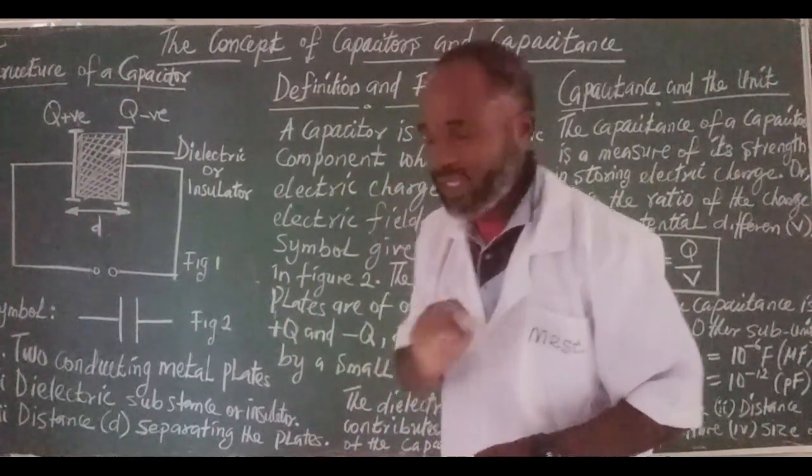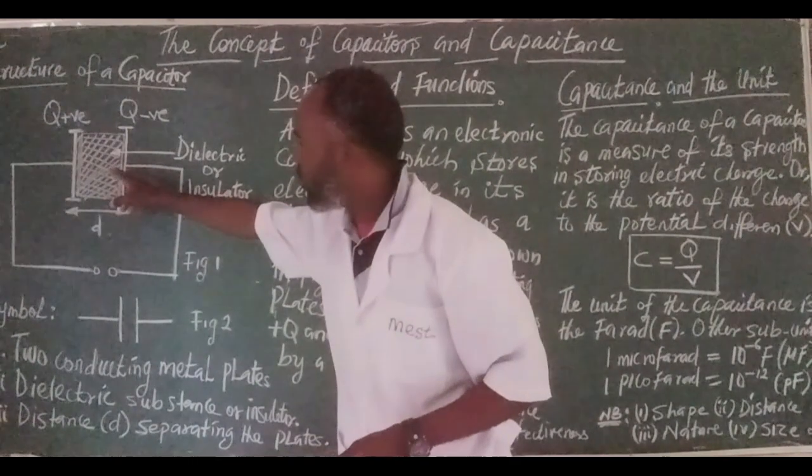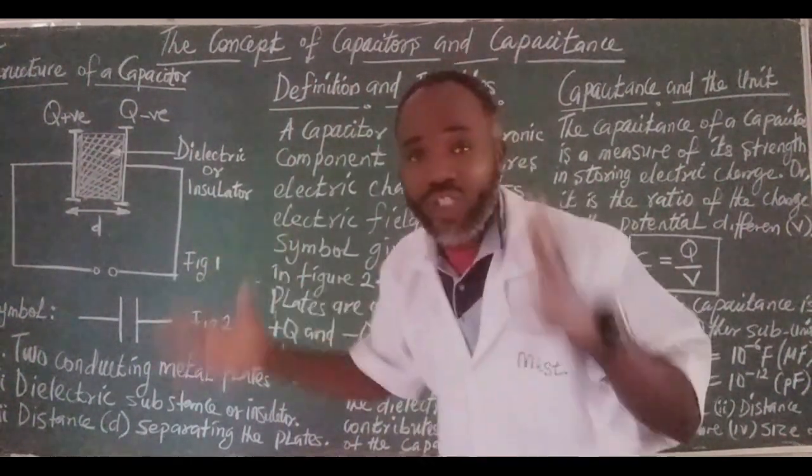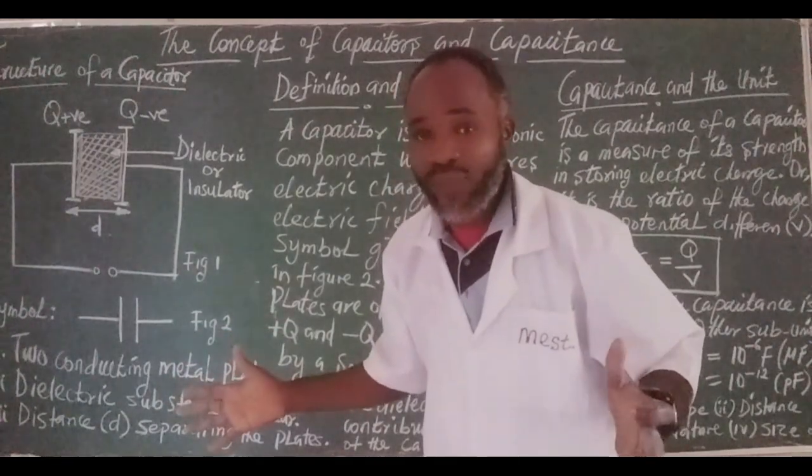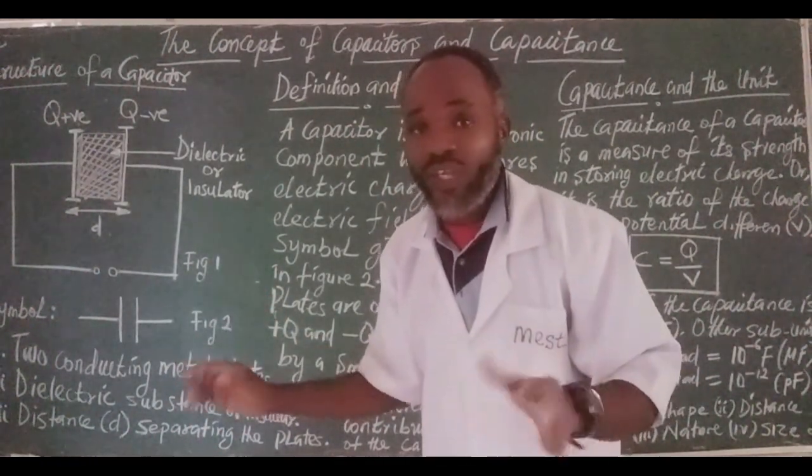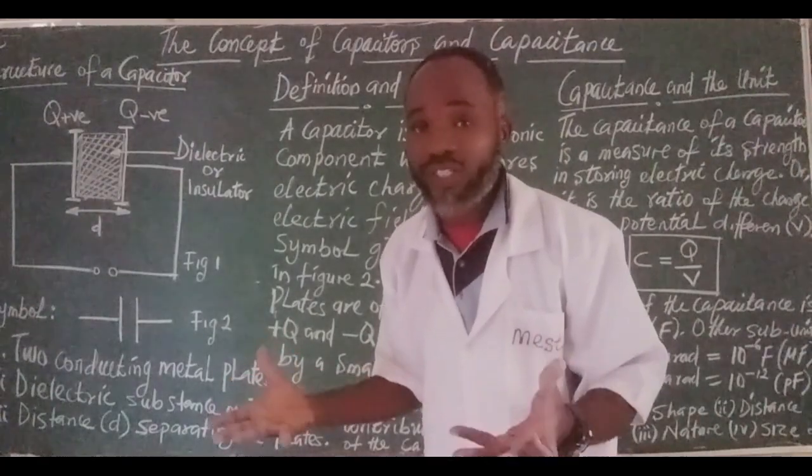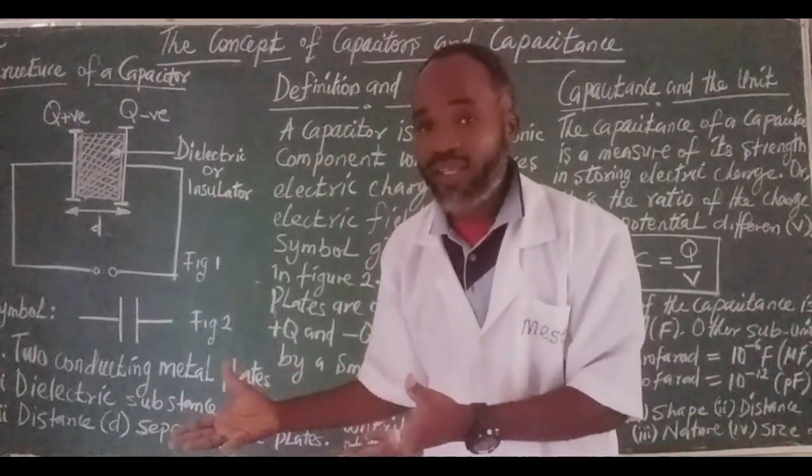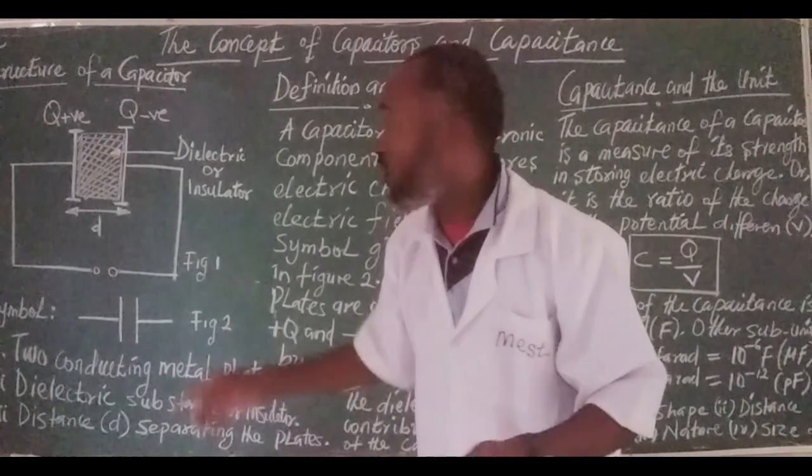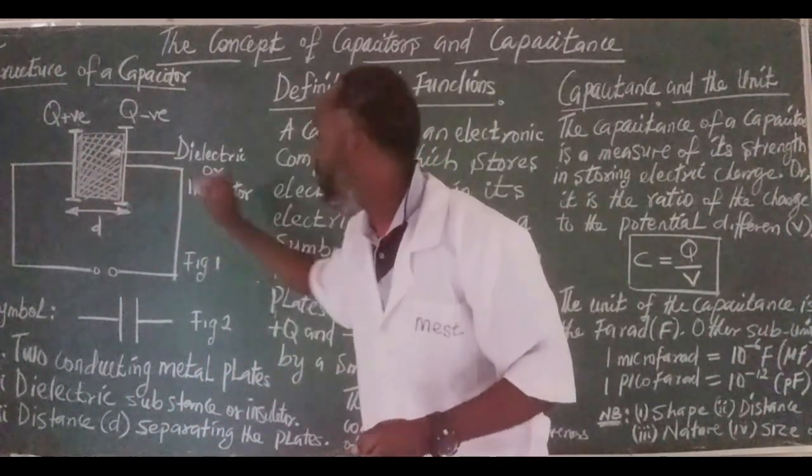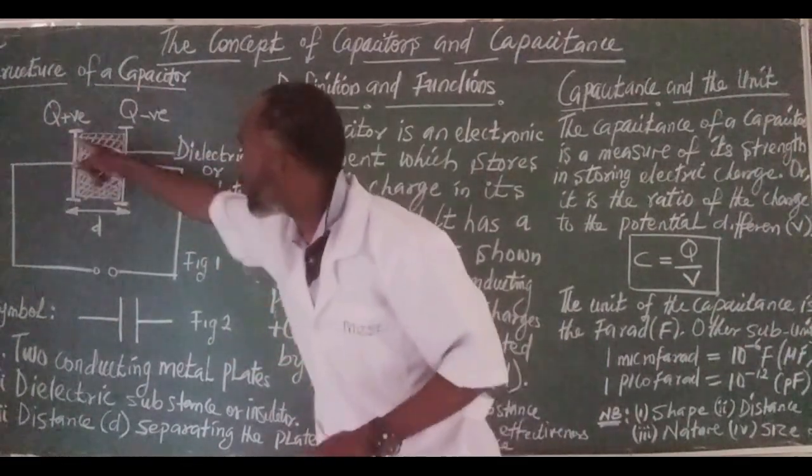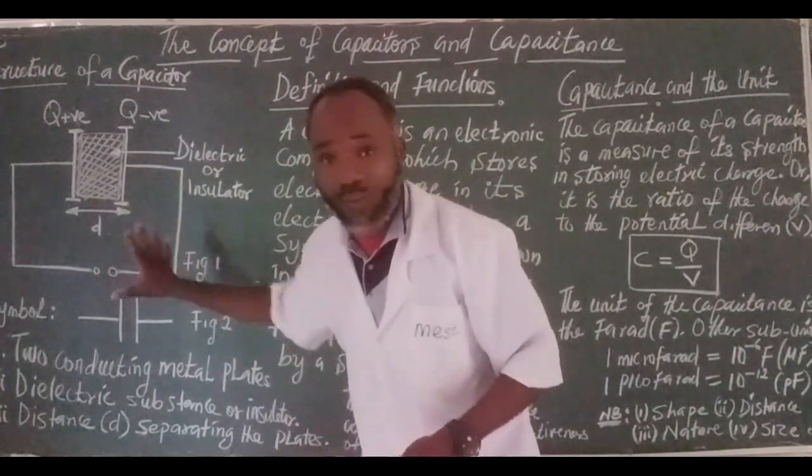Now quickly, without wasting time, why do we have dielectric substance in between the two plates? It's simply because the dielectric substance enables the capacitor to function very well with regard to its capacitance. Therefore, it increases the capacitance of the capacitor when you have an effective dielectric substance meshed between the two plates.